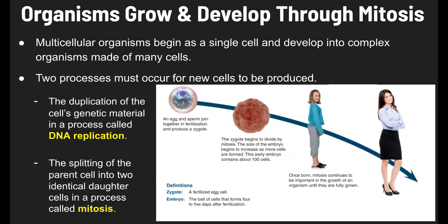Once born, so that embryo is going to develop into a fetus, and when this fetus is born we have a newborn baby. Once born, mitosis continues to be important in the growth of an organism — they continue to create new cells, and that's how they're growing. This growth continues until they're fully mature in their adult form.